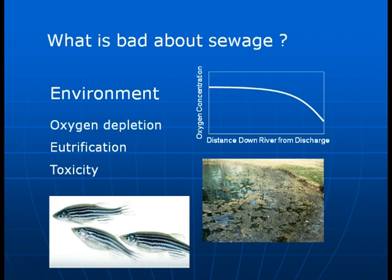The other thing is eutrophication, which is the buildup of nutrients in the water causing algae blooms, as you can see in the photo in the lower right-hand corner. And the other issue is toxicity — some of the constituents, such as ammonia, are in fact directly toxic to fish.